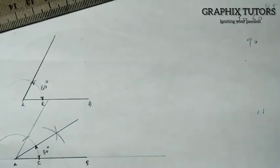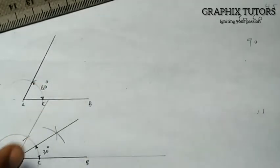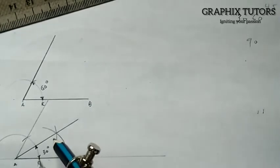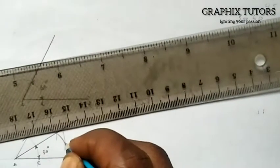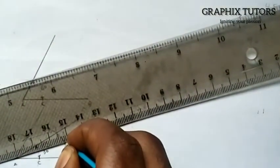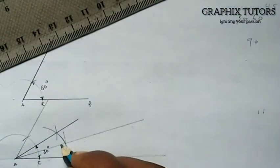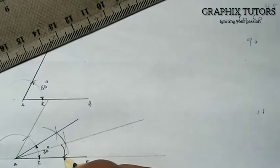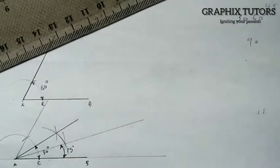If you want to construct 15 degrees, construct 30 degrees first, then bisect it. Place the compass at one side of the 30-degree angle, strike an arc, then do the same from the other side. Where the arcs meet, draw a line — that gives angle 15 degrees. The angle between the baseline and that line is 15 degrees.